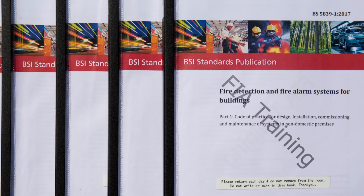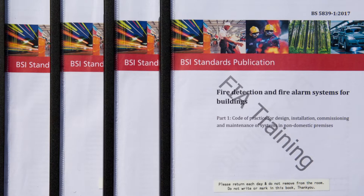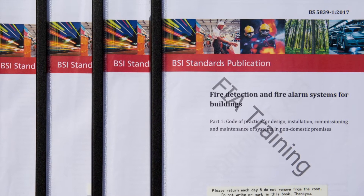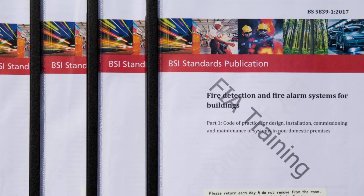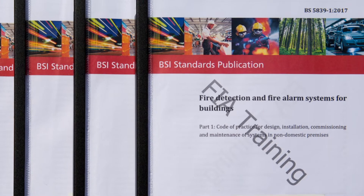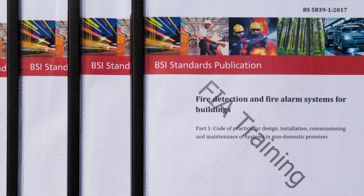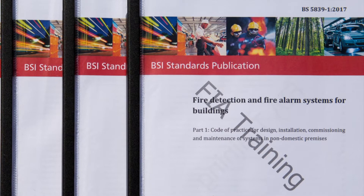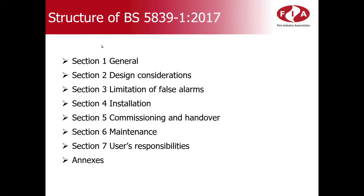As many of you will have sat the Unit 1 and Unit 2 course remotely, we would have been unable to issue a copy of the British Standard to you during the course, as would normally be the case in order to allow for your familiarisation with the Code of Practice. This video has therefore been produced not to teach the requirements of BS 5839 Part 1, but to offer guidance on how to navigate the Code of Practice, both during the examination and as you continue to work in the industry. The sequence of questions within the exam will follow the sequence of BS 5839 Part 1, so it is beneficial to understand how the Code of Practice is structured and how to navigate through the document using the Contents page at the beginning of the Standard.